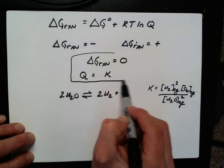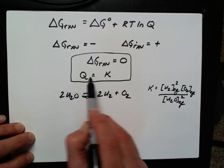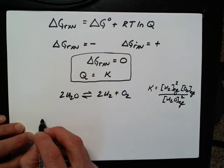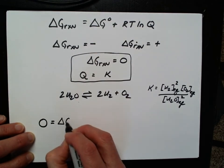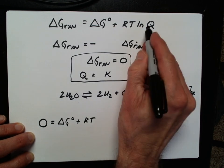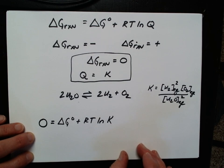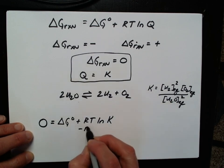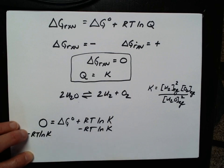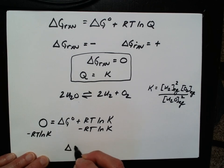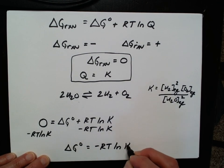I'm going to plug these values in together. If delta G of the reaction is zero, we're at equilibrium and Q equals K. So I can plug in zero for delta G of the reaction and set that equal to the standard delta G plus RT times the natural log of K. Subtracting RT·ln(K) from both sides gives us the equation: standard delta G equals minus RT times the natural log of the equilibrium constant.